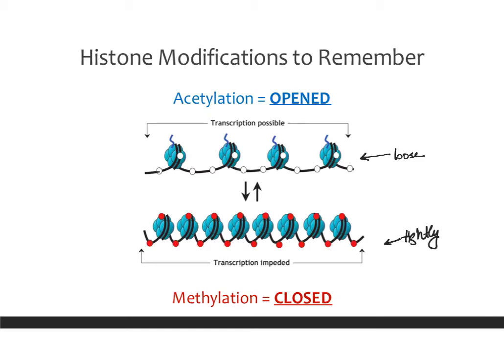If you get more into this field, read up on specific modifications — for example, H3K27 methylation means that histone H3 has a methylation on lysine 27, signaling closed DNA. A slightly different modification, perhaps on H2 or a different lysine, could mean something slightly different. But the important things to understand are that acetylation in general opens DNA, and methylation in general closes DNA.